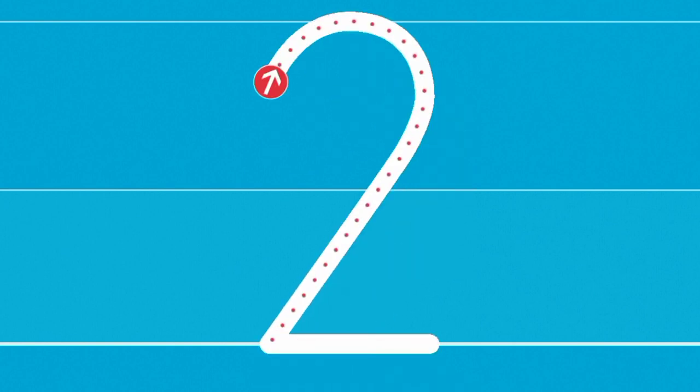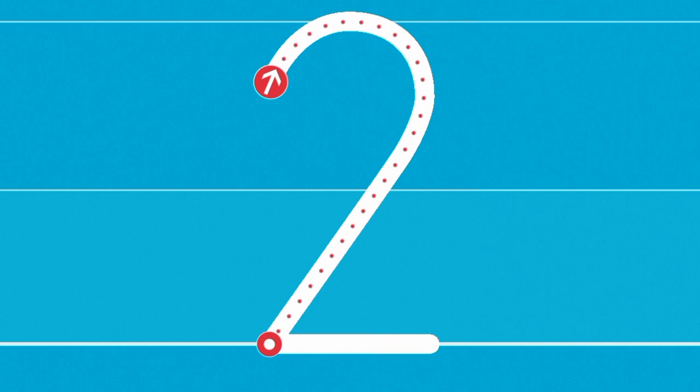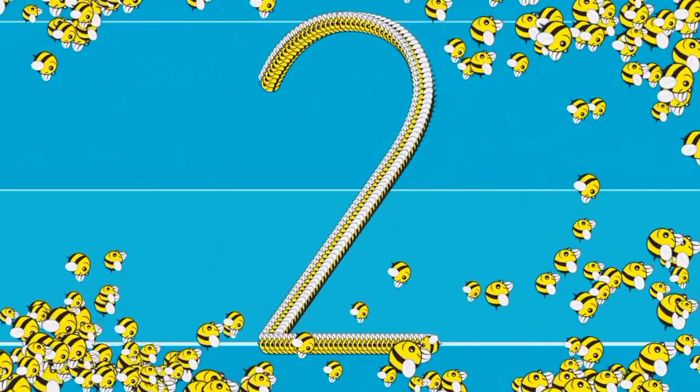Now what's the next number? Two. Curve and dash. Now let's try. And dash. Let's do it again. Curve and dash. Bravo.